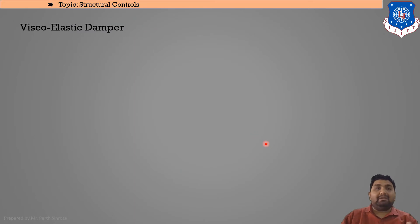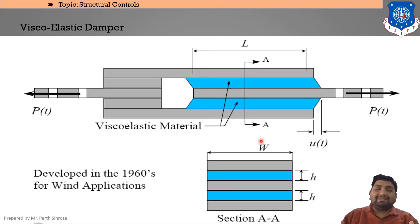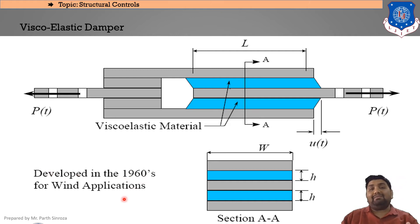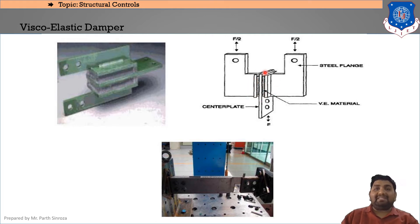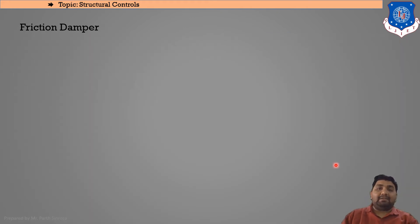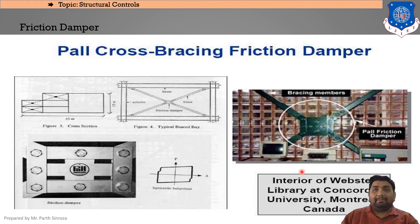Next is the viscoelastic damper. It consists of a viscoelastic material sandwiched between steel plates. It was developed in the 1960s originally for wind applications and later adapted to sustain earthquake loads. The actual figure shows the viscoelastic damper with a center plate and steel flange, with the viscoelastic material sandwiched in a plate-type structure.